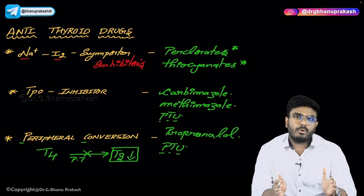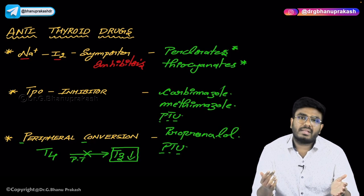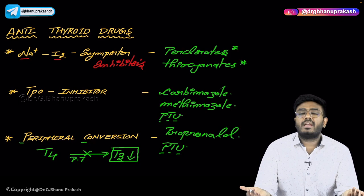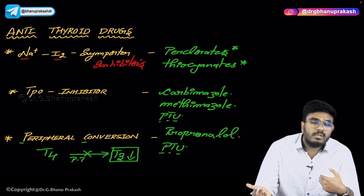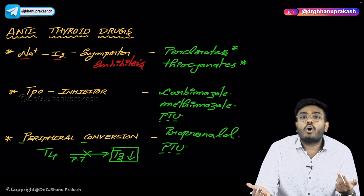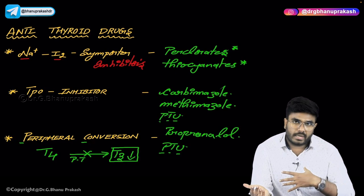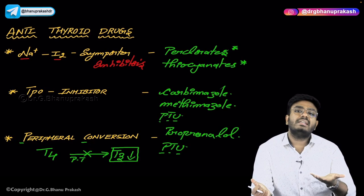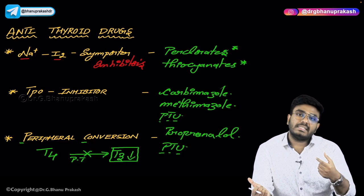These are important topics about hyperthyroidism, hypothyroidism, and the drugs used to treat hyperthyroidism. For hypothyroidism treatment: since there is no T3/T4 being produced, we replace them with a drug called thyroxine (T4). After taking thyroxine, it is converted to T3 in the body and shows its effects. These are the important points you need to know for your exam. Hope the video is helpful. Thank you.